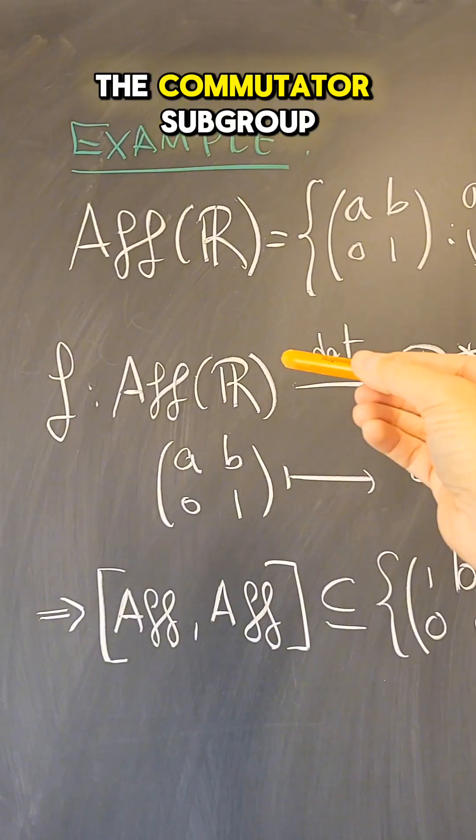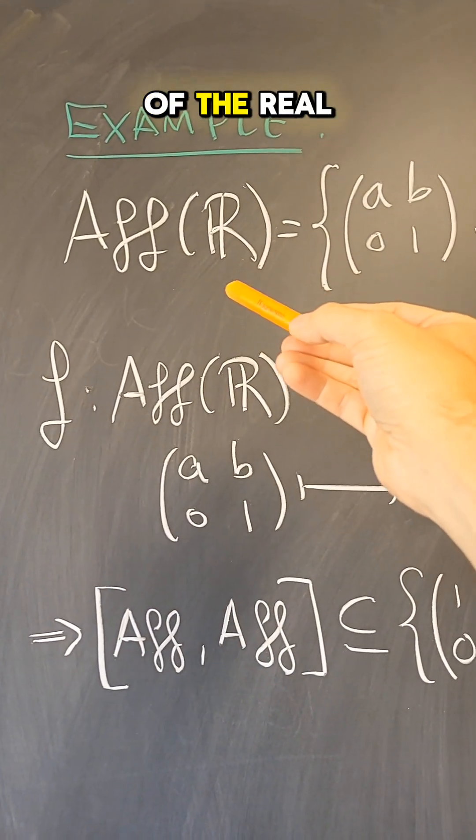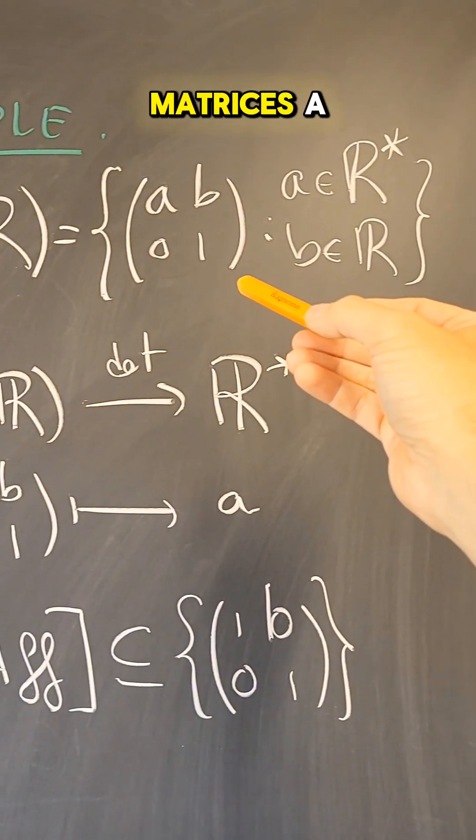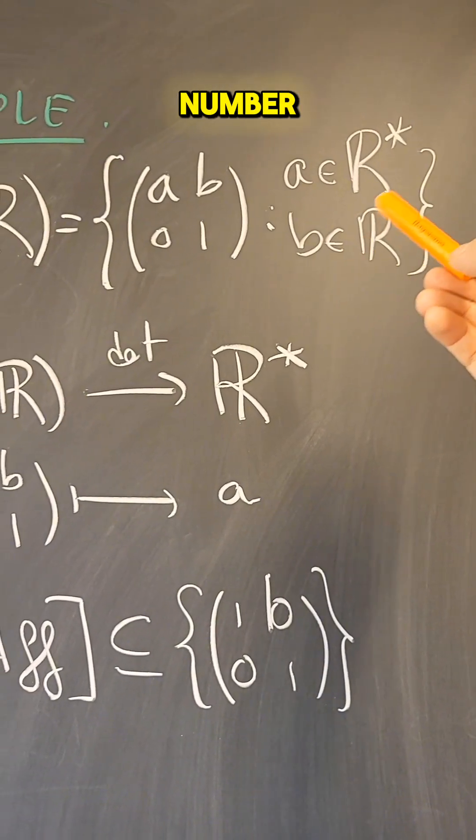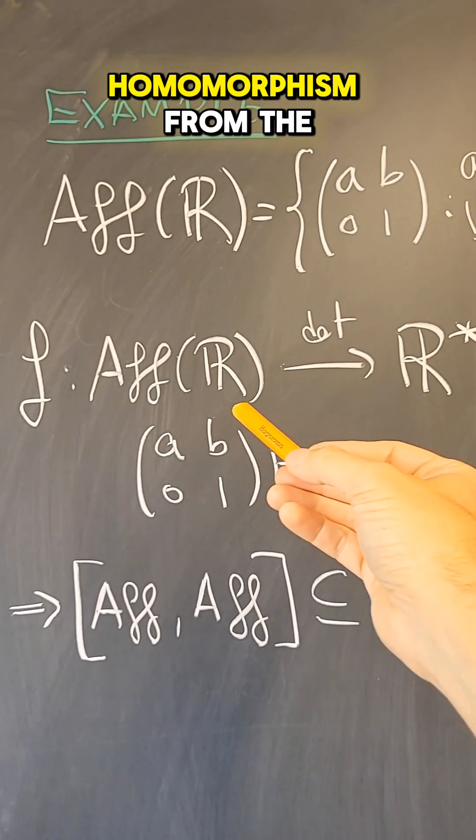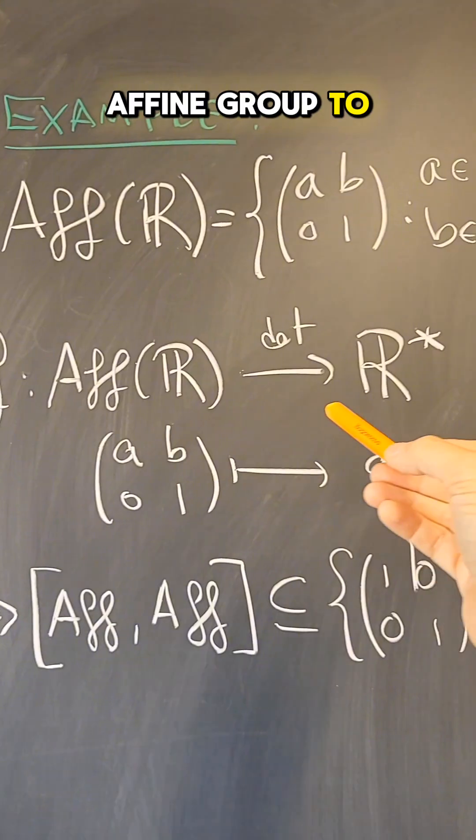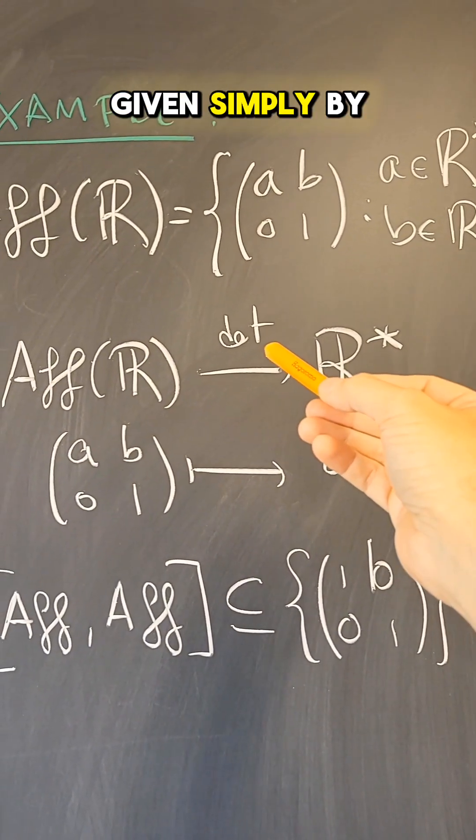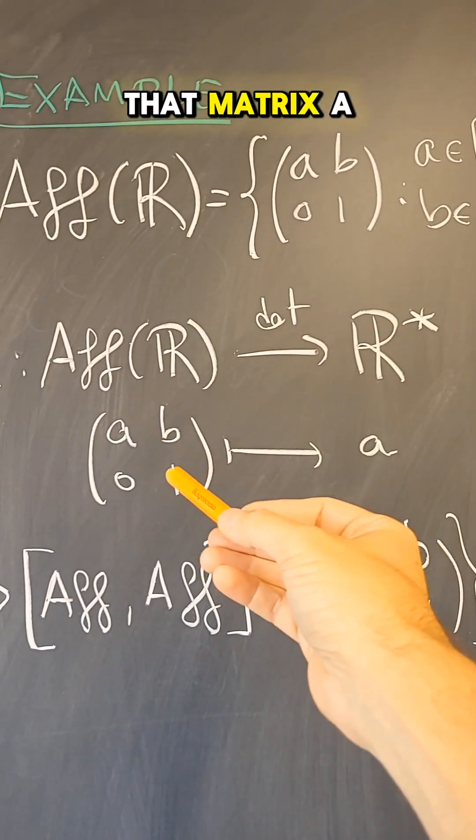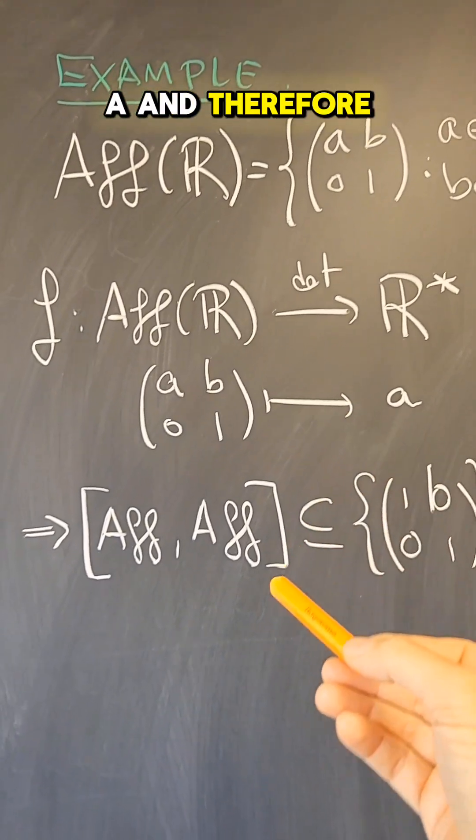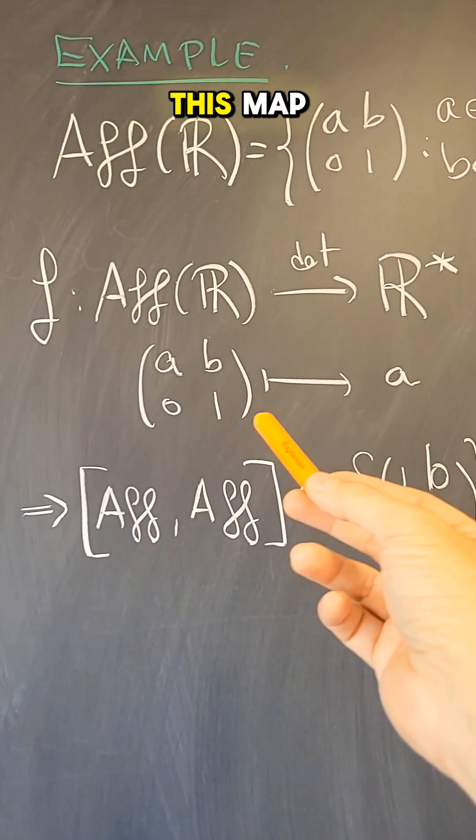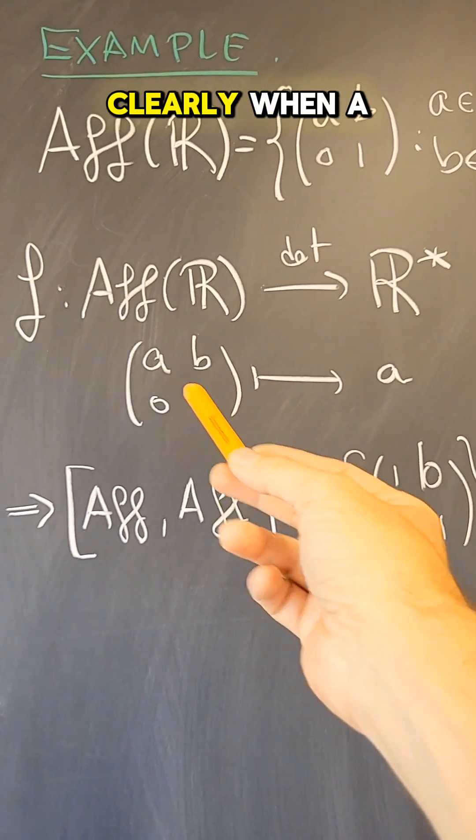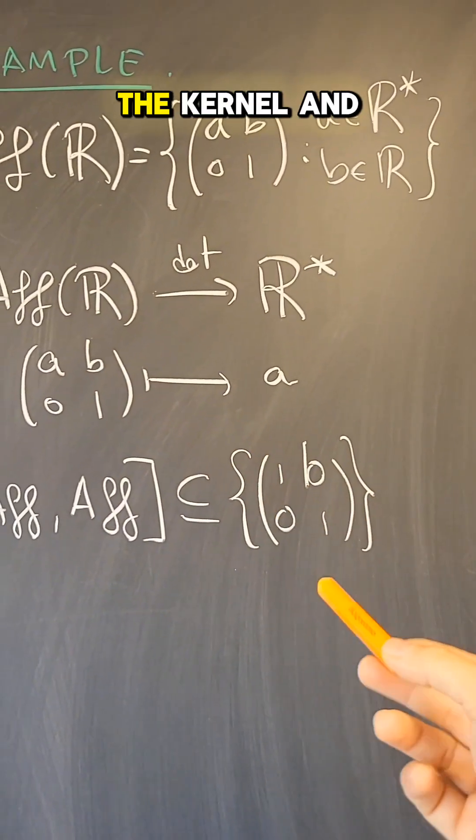Now, let's compute the commutator subgroup of the affine group of the real line, that is, the group of matrices AB01 with A non-zero and B any real number. There is a homomorphism from the affine group to the non-zero reals given simply by the determinant of that matrix, AB01 goes to A, and therefore the commutator subgroup has to be contained in the kernel of this map. The kernel of this map is clearly when A is one, so this is the kernel.